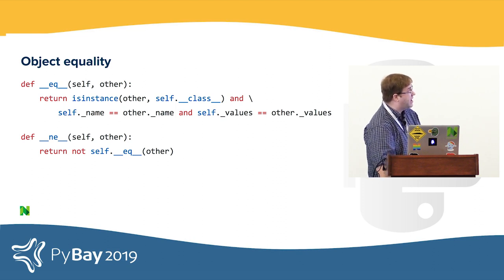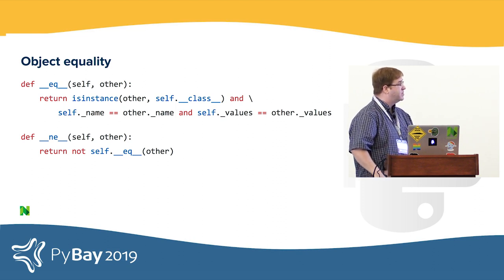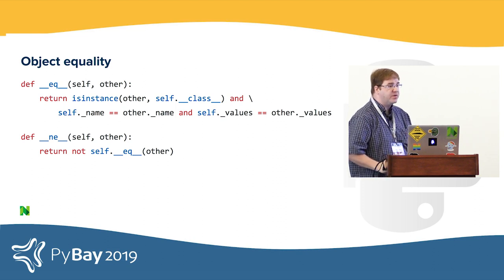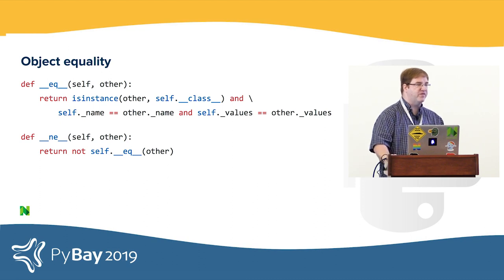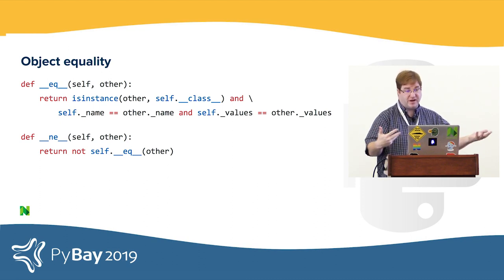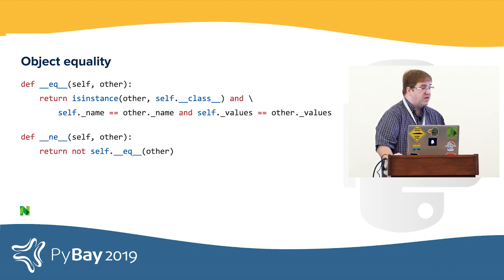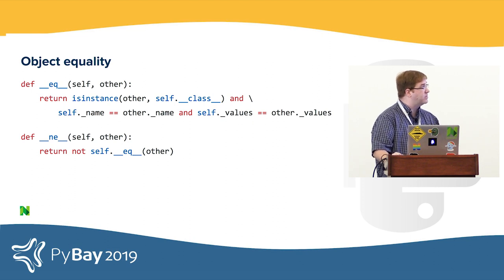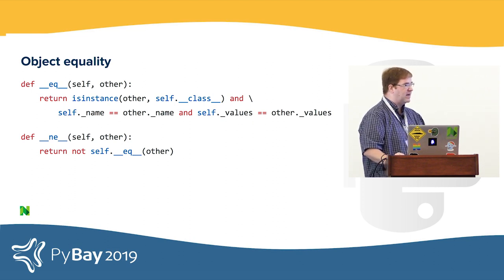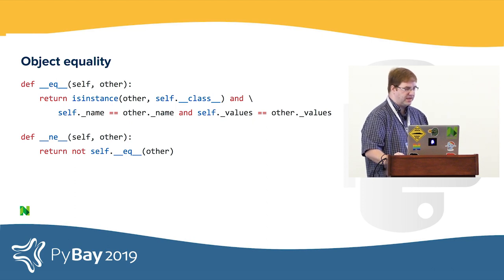Now that we've started creating some objects and added some extra functionality, here's a more simple use case you've probably encountered before. If you ever need to make custom logic around how you compare two objects, there are two built-in methods. __eq__ is the logic for seeing if they're equal — we just compare their values, names, and class. And for __ne__, we just check if it's not equal.